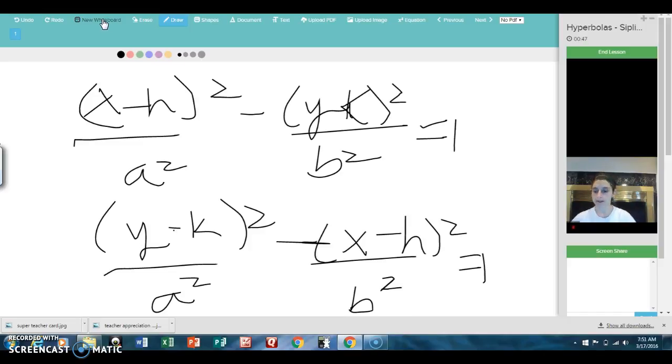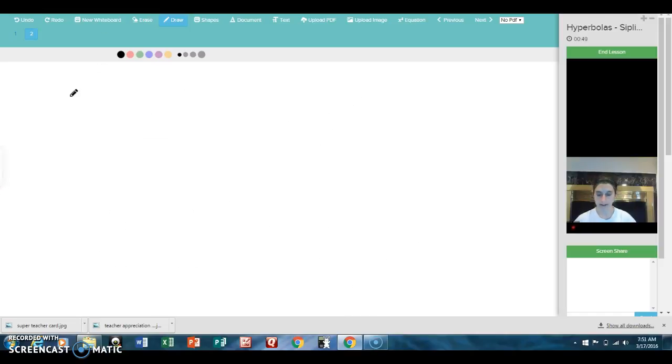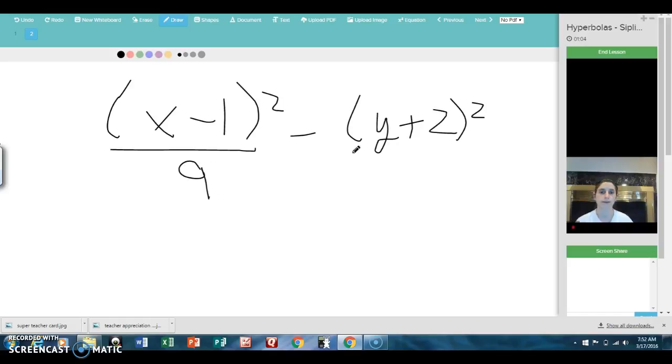Let's take a look at an example, and we are going to graph this in a way that I think is kind of easy. So, here we go. x minus 1 squared, and then we'll have y plus 2 squared. We'll put this guy over 9, we'll put this guy over 4, and we'll set it equal to 1.